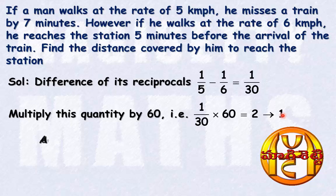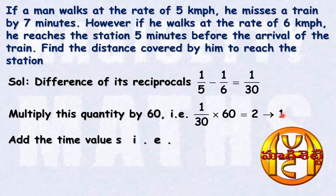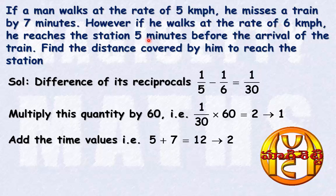The next step is to add the given time values. Here we have two time values: 7 minutes and 5 minutes. Just adding these two, we get 12. Let this be equation number 2.